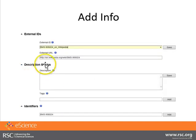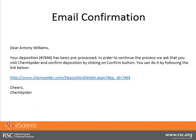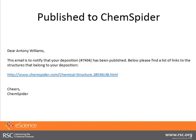I went to ChemSpider, logged in, loaded the structure, and accepted it for deposition. I added some information — the BMS identifier. In my email I received confirmation that it had been preprocessed, meaning that InChIs are generated, molecular formula is generated, SMILES — using a whole standard set of tools that we use for everything we deposit on ChemSpider, so we have internal consistency. Then I received an email telling me, once I'd accepted and confirmed, that it was published. The chemical structure ID on ChemSpider is 28536138, if you want to check it.